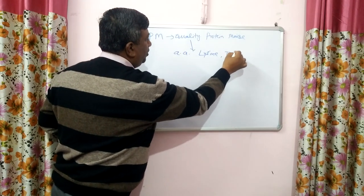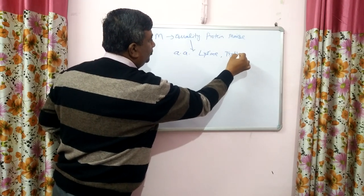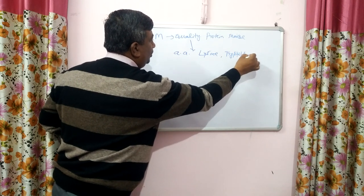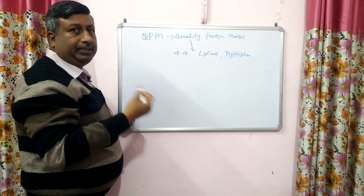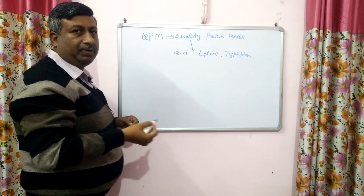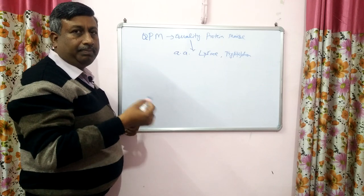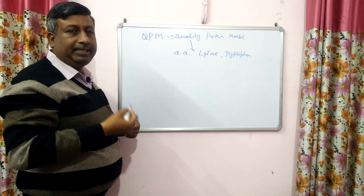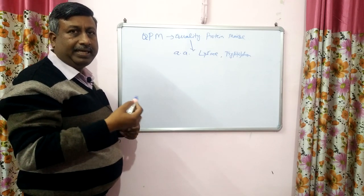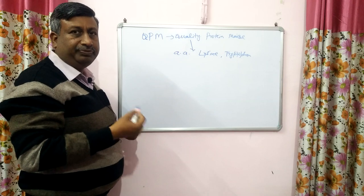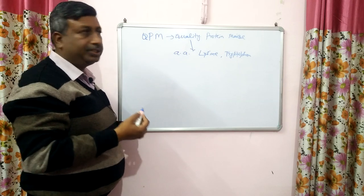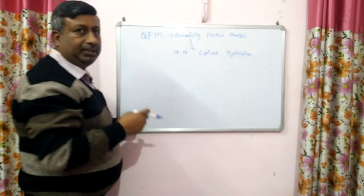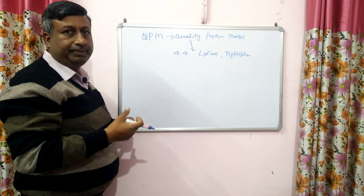In QPM, these two amino acid quantities are high — almost double compared to normal maize. In general, in cereal grains like rice, wheat, and maize, these two amino acids are deficient.